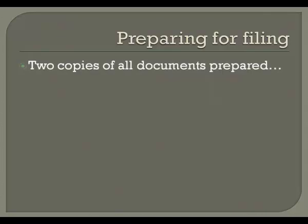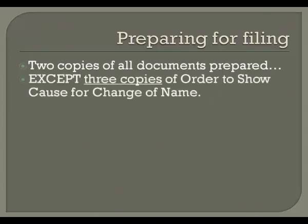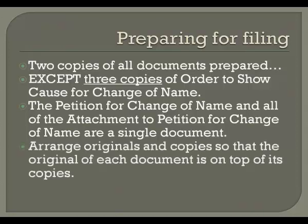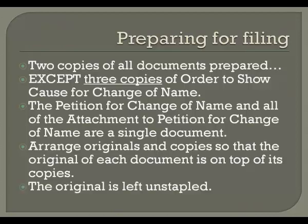Now that you have completed all of the paperwork necessary to request that your name be changed, you must prepare your paperwork for filing with the court. Make two copies of all of the documents that you have prepared with the exception of the order to show cause for change of name — make three copies of that document, as this is the document that is going to be published in the newspaper. Keep in mind that the petition for change of name and all of the attachments to the petition are a single document. Arrange the original and the copies of each document so that the original is on top and the copies are underneath. If any document is more than one page, the copies are stapled; however, the originals are left unstapled.